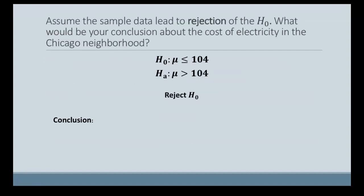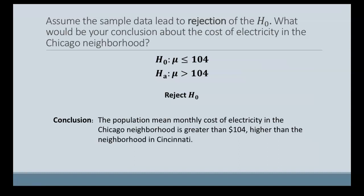So this first part, assuming that the sample data leads to the rejection of the null, what would our conclusion be? So if we reject the null hypothesis of μ is less than or equal to 104, what we're saying is that the population mean monthly cost of electricity in that Chicago neighborhood is greater than $104, which would then make it more or higher than the comparable neighborhood in Cincinnati.